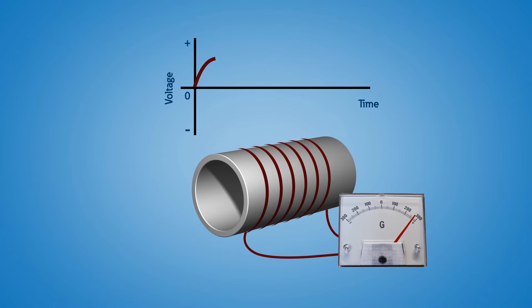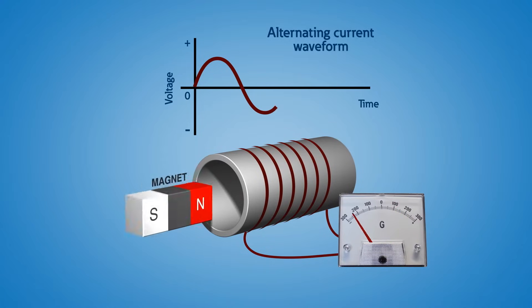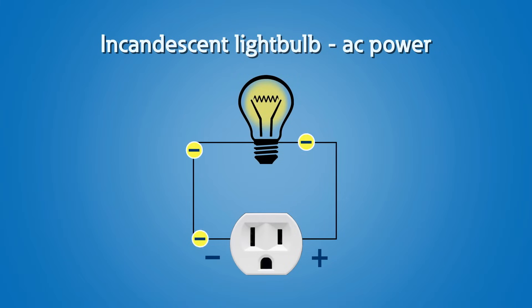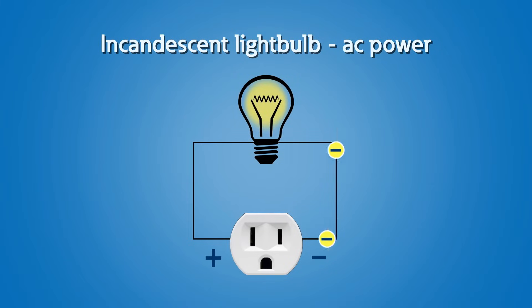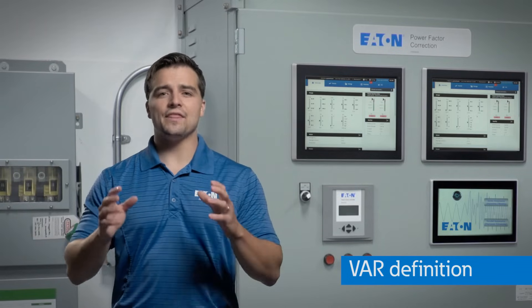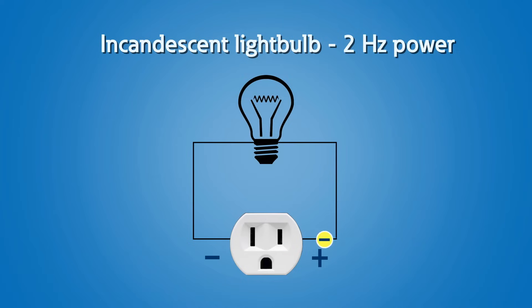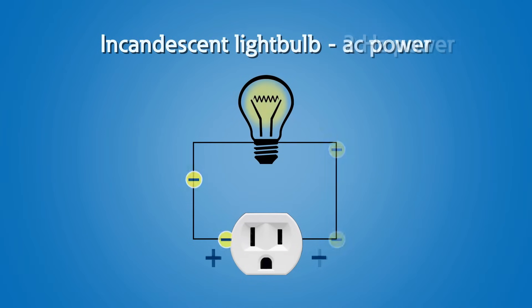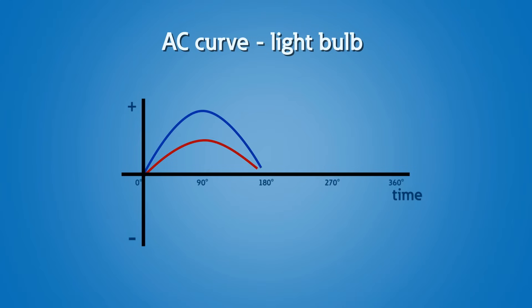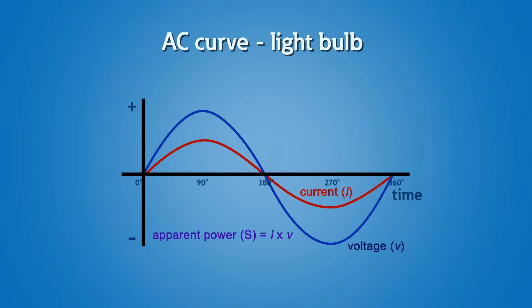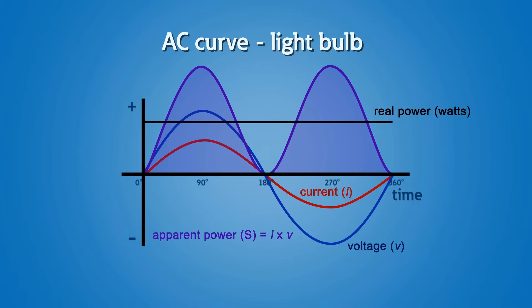Alternating current, or AC, is a 60-hertz sine wave that oscillates back and forth. If you have a regular incandescent light bulb, the electrons are actually rubbing back and forth in the wire. The resistance of the light bulb acts almost like a friction that heats up the element and causes it to illuminate. Looking at the graph, we can see that the voltage and current are in phase for this resistive load. Because power equals voltage times current, we can see our power curve.